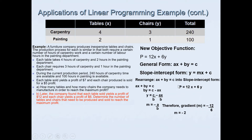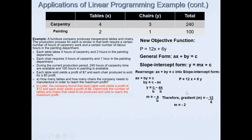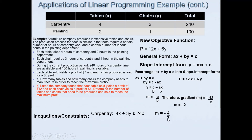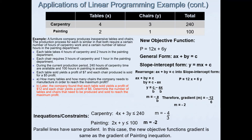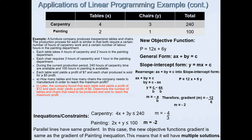Now we check whether this objective function is parallel to any of the constraints. For the carpentry constraint 4x + 3y ≤ 240, the gradient is −4/3. For the painting constraint 2x + y ≤ 100, the gradient is −2/1 = −2. The gradient of the new objective function (−2) matches the gradient of the painting constraint (−2), meaning the lines are parallel. This tells us there will be multiple solutions.